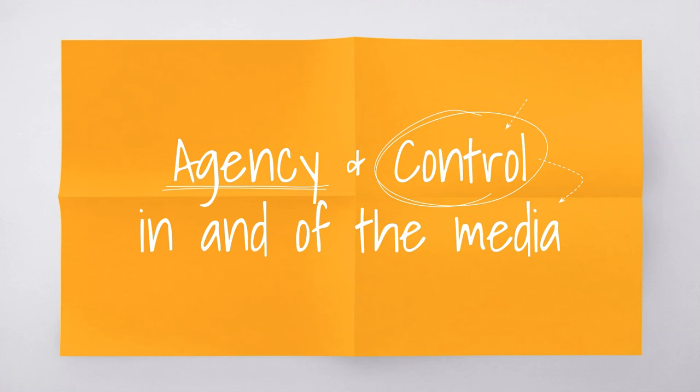Hello and welcome to our first video on Unit 4 Area of Study 2 of VCE Media — Agency and Control in and of the Media. That's the full title of this area of study. Commonly we'll just call it agency and control, but this idea of 'in and of the media' is important and we will get to that a little later on.